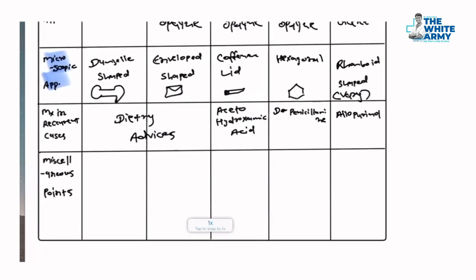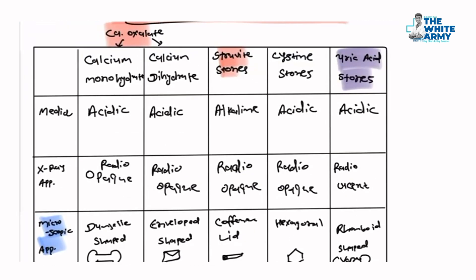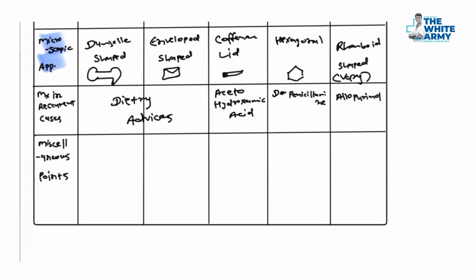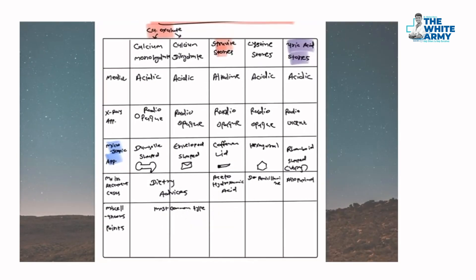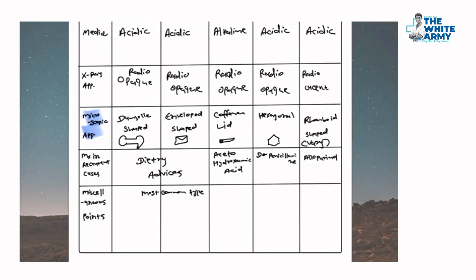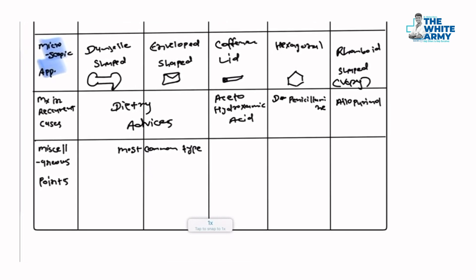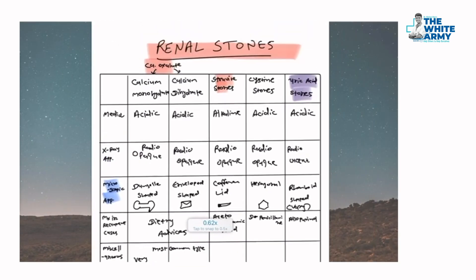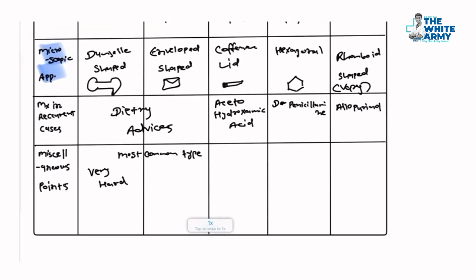Some miscellaneous points: calcium oxalate is the most common type of renal stone. Regarding calcium monohydrate — it is a very hard stone; remember the dumbbell is hard. Calcium dihydrate is also known as mulberry stone.